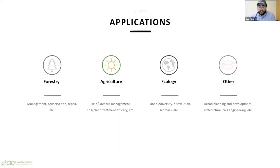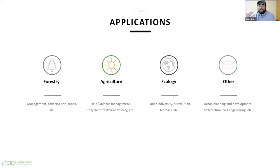A few applications for the CI-110: there are forestry applications for management, conservation, and repair. There are also agricultural applications such as orchard management, field management, treatment efficacies, and looking at disease — which we'll hear about shortly. There are ecology applications looking at plant biodiversity, distribution, and biomass. Some users even use it for non-traditional applications like urban planning, architecture, or civil engineering. So there's a wide variety of uses for this instrument.